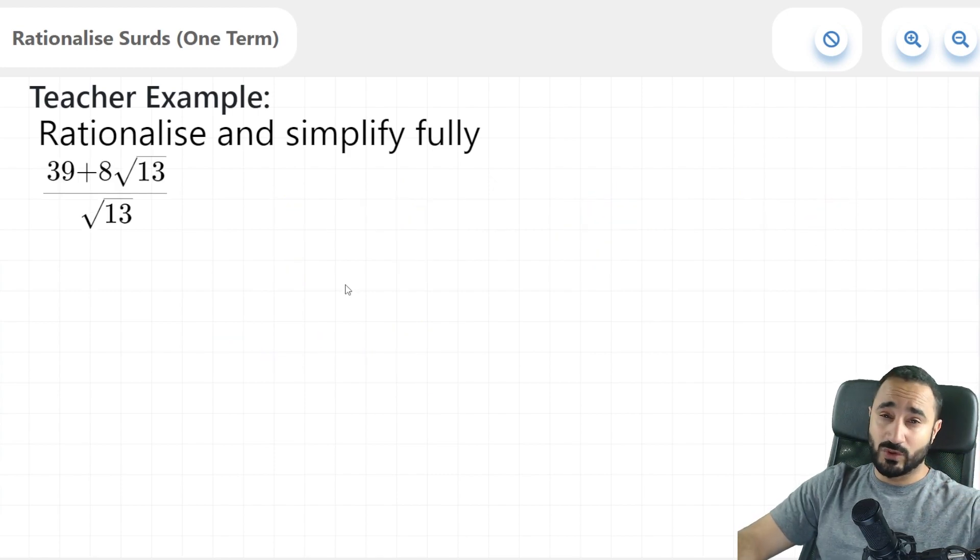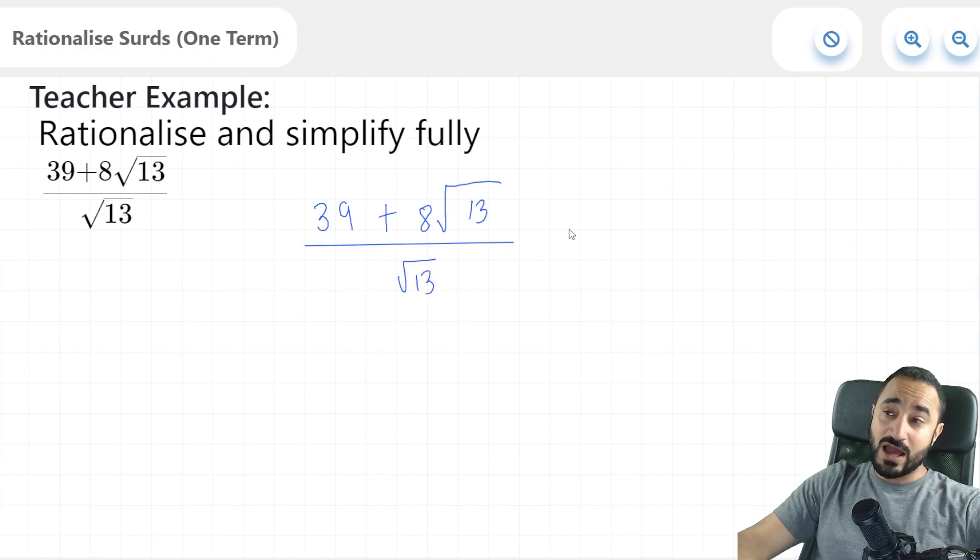Now let's take a look at the most difficult example for this lesson. So rationalizing surds with one term, and it looks like this. So the first thing we're going to do is exactly what we've done for the previous examples, which is multiply the numerator and denominator by this denominator here, root 13. So I'm going to multiply the numerator by root 13 and the denominator by root 13.